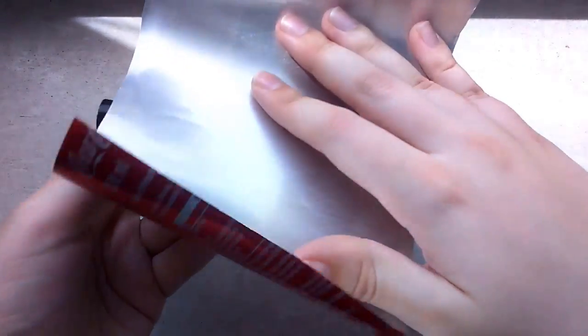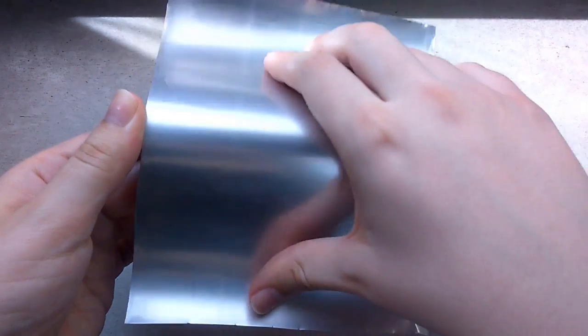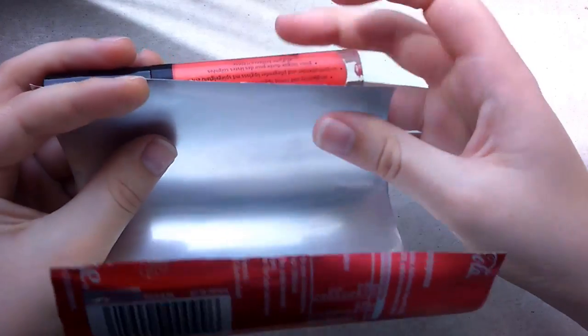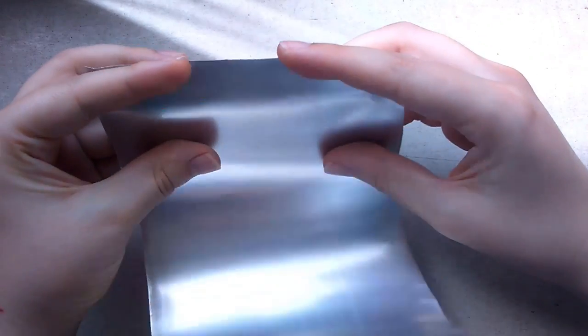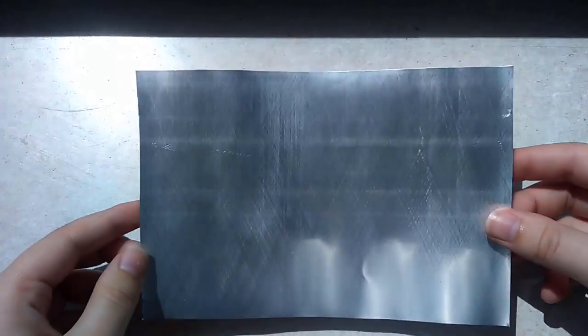With a big sheet like this it can be a bit tricky, but with a smaller sheet it will go much faster. Just keep doing that until the metal looks more or less flat.